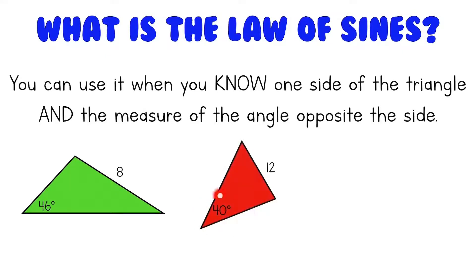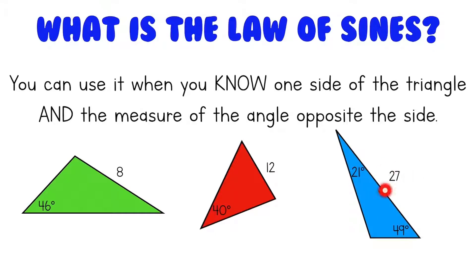Same with this triangle — we know this angle and the side opposite of it. And for this triangle, we know one of the side lengths, but we aren't exactly given the measure of this angle. However, we know that the angles of a triangle always add up to 180 degrees, and we know two of the angles, so if we just do 180 minus 21 minus 49, we get this angle as 110 degrees. So we know an angle and the side opposite of it.